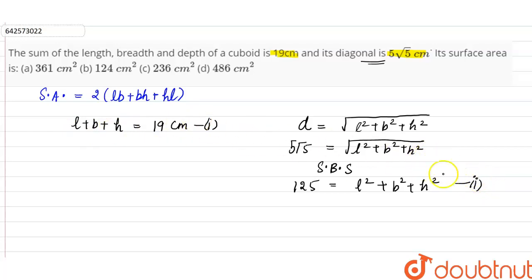So if this is equation two and this is equation one, now what we have to do is square equation one both the sides. So here if we apply a square, L plus B plus H whole square is equal to 19 square. Now there is an identity of A plus B plus C whole square which is equal to A square plus B square plus C square plus 2AB plus BC plus CA.